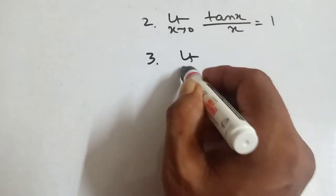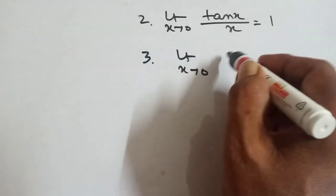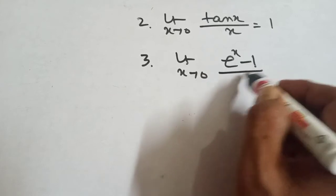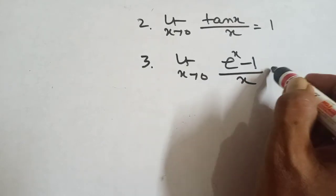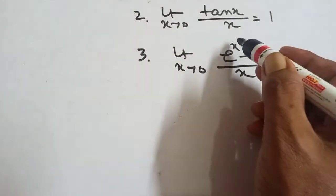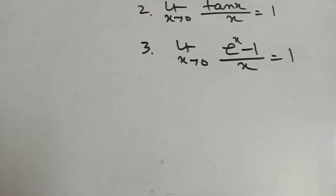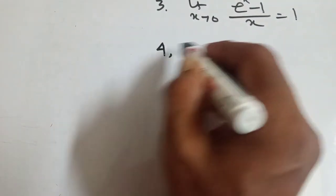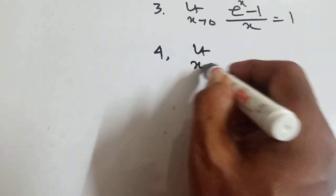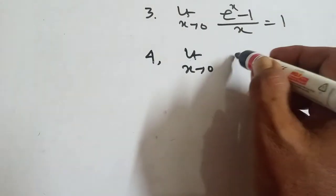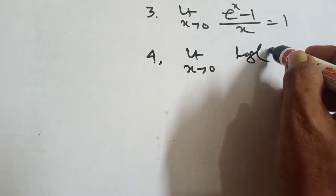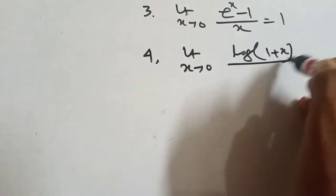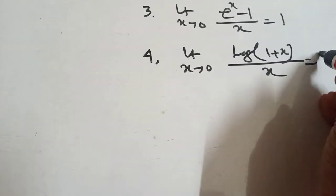Formula 3: limit x tends to 0, e to the power x minus 1 by x, this is also equal to 1. Formula 4: limit x tends to 0, log 1 plus x by x equal to 1.